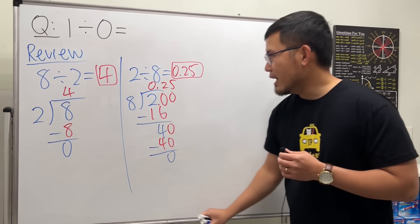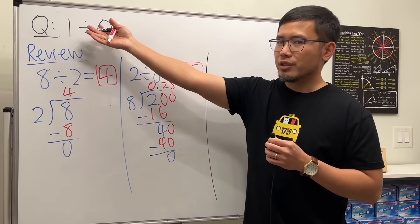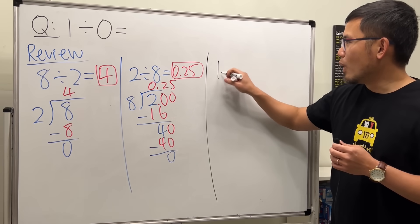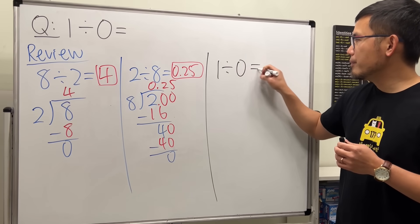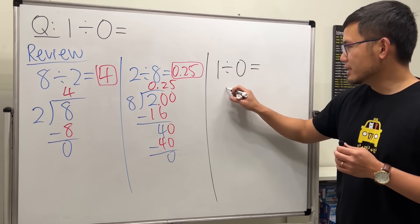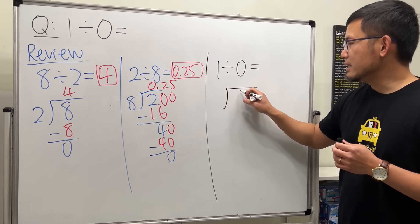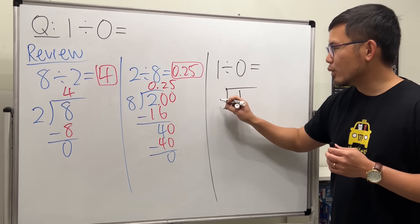All right, now let's go ahead and see this question here now. If we have 1 divided by 0, how do we do it? 1 goes inside and then 0 goes on the outside, right?